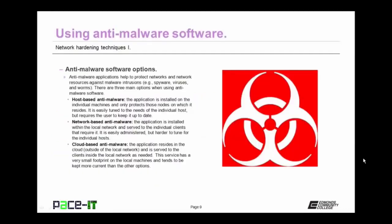Let's move to using anti-malware software. Anti-malware applications help to protect networks and network resources against malware intrusions such as spyware, viruses, and worms. There are three main options. There's host-based anti-malware, where the application is installed on the individual machines and only protects those nodes on which it resides. It's easily tuned to the needs of the individual host, but requires that the user keep it up to date.